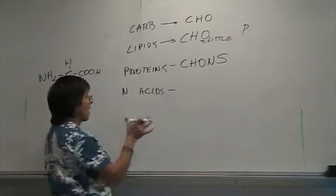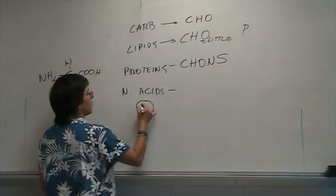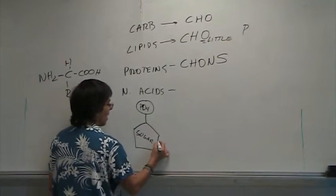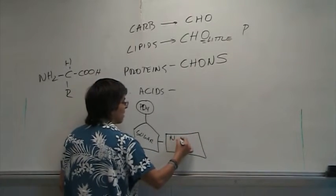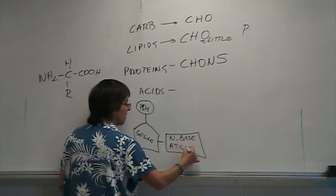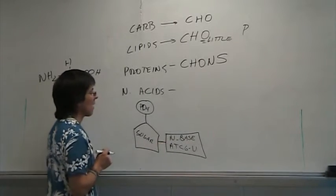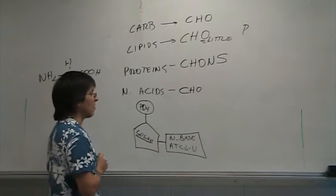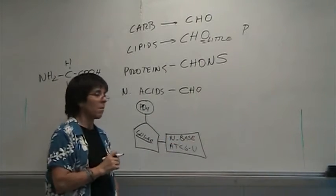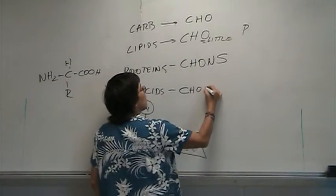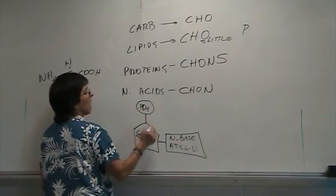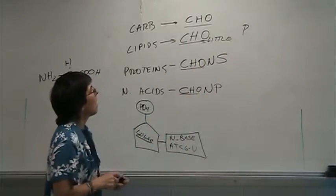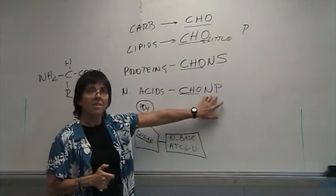Now, look at nucleic acids — your nucleic acids have a phosphate group attached to a 5-carbon sugar. The sugar is attached to a nitrogen base that can be A, G, C, or uracil if we are talking about RNA. If you look at the structure: the sugar gives you CHO; the nitrogen base gives you nitrogen; and of course you have phosphorus. So everybody has the basic organic structure — carbon, hydrogen, oxygen — and then proteins add nitrogen and sulfur, and nucleic acids add nitrogen and phosphorus.